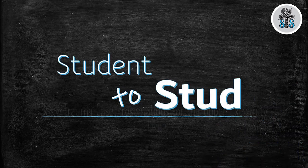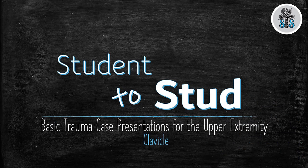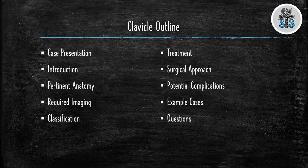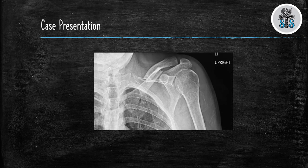Welcome back to Student to Stud. Today we're going to go over a basic trauma case of the upper extremity, talking specifically about the clavicle. Here's an outline of what we're going to be talking about today. We're starting off with a case presentation: you get called from the emergency department and they tell you that you have a 37-year-old male that fell onto his left shoulder while playing football with some buddies. The resident asks you to pull up the x-rays and tell him what you see.